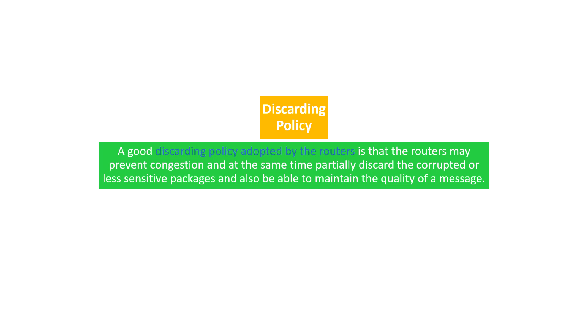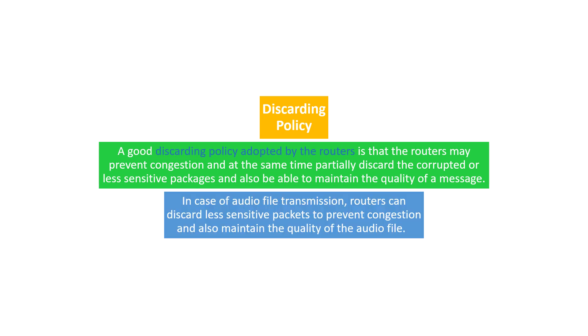The next policy is the discarding policy, adopted by routers. Routers may prevent congestion by partially discarding corrupted or less sensitive packets while maintaining the quality of messages. For example, in the case of audio file transmission, routers can discard less sensitive packets to prevent congestion while maintaining the quality of the audio file. This is how the discarding policy works.